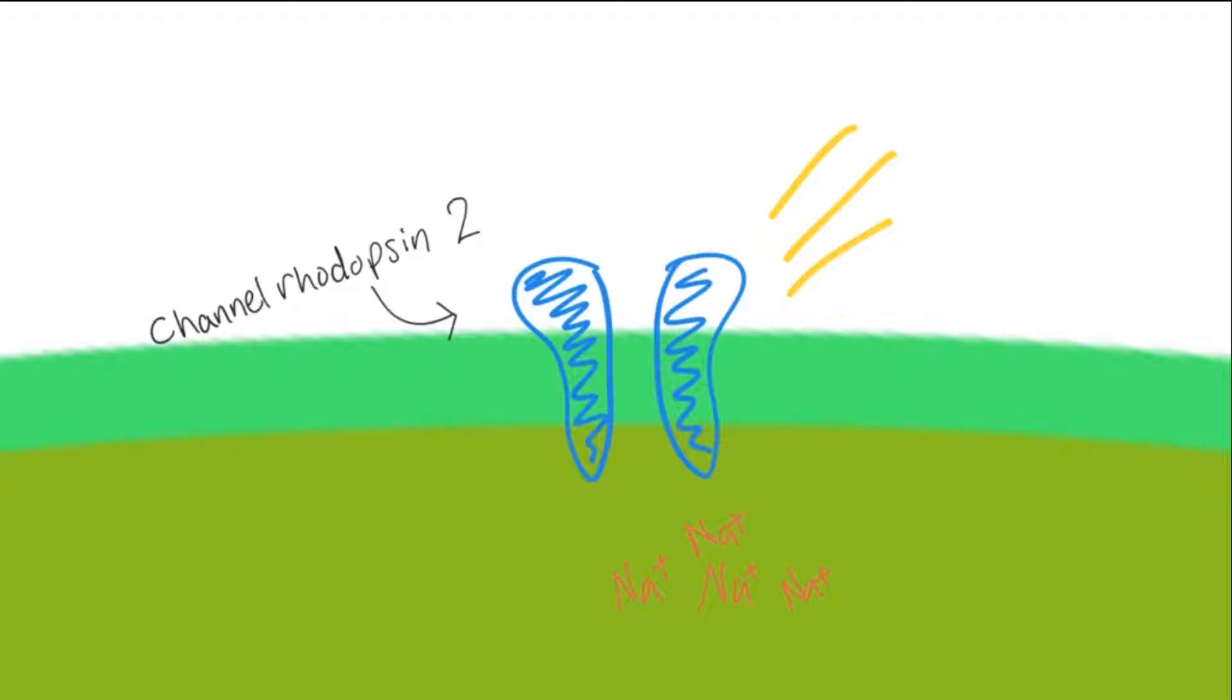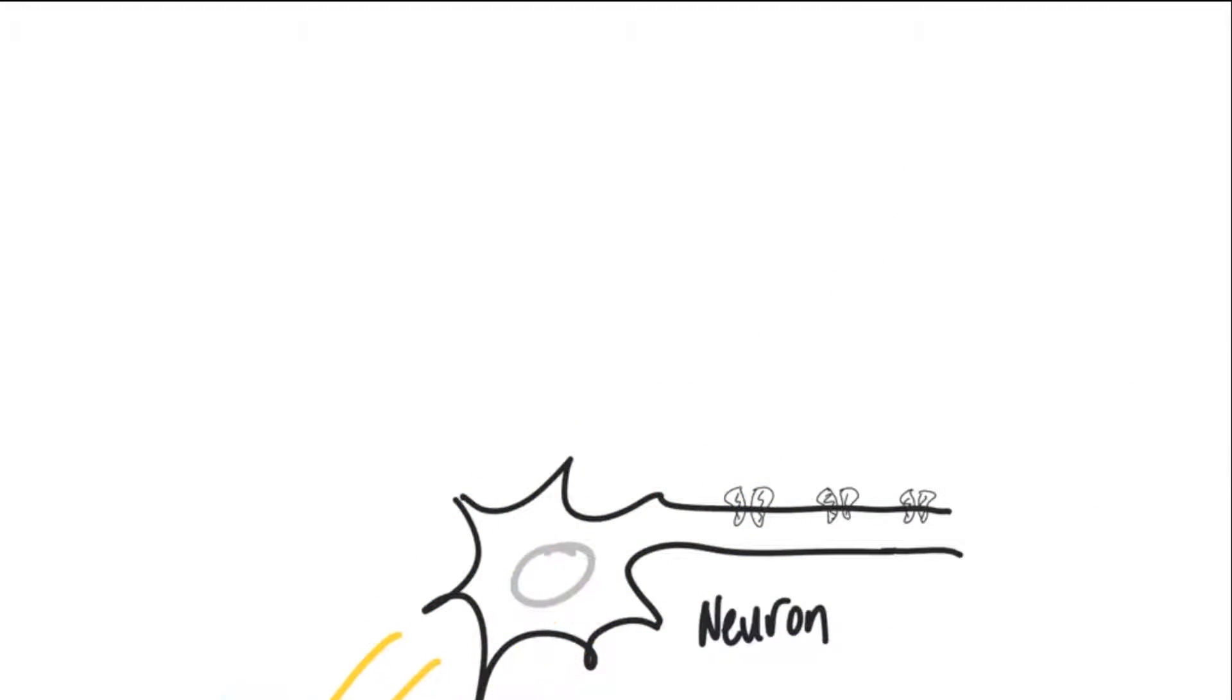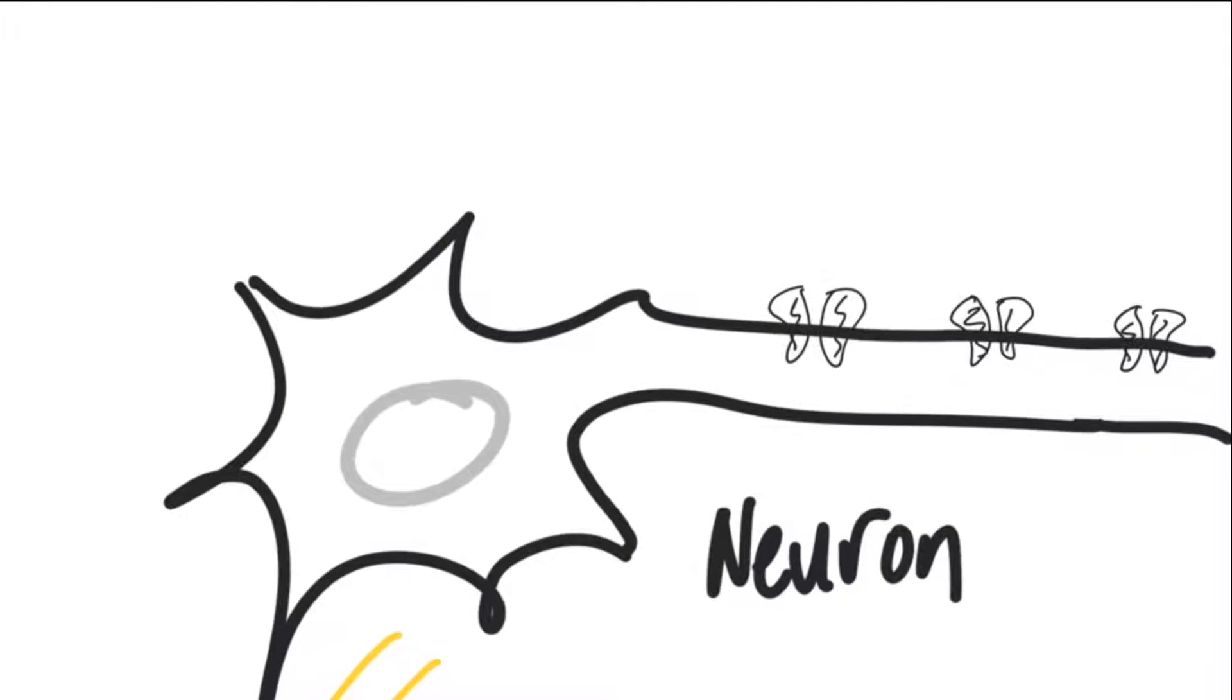This opening of channels is extremely similar to how neurons communicate through electrical signals. So let's take a look at a neuron. A neuron is a special type of cell that's found in your nervous system throughout your entire body. It has a long axon that has a bunch of ion channels on it.